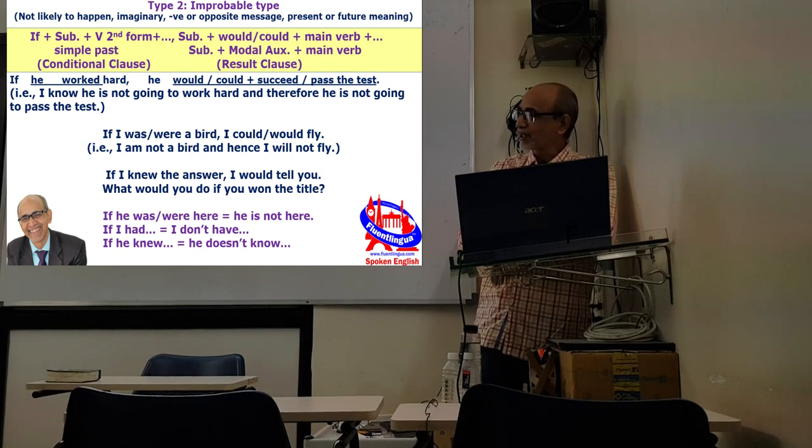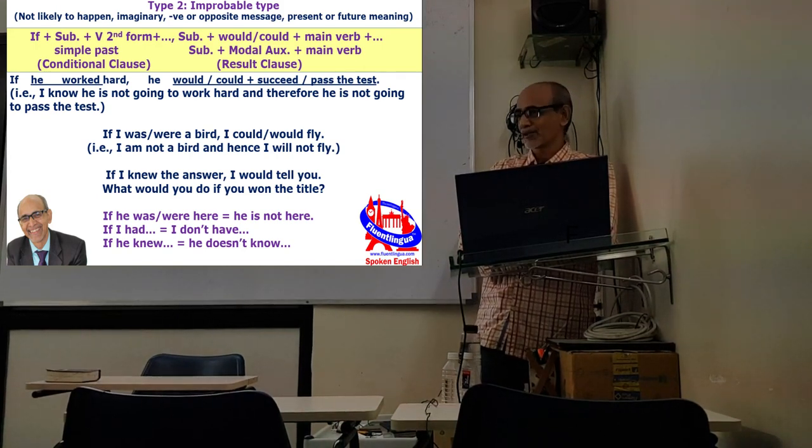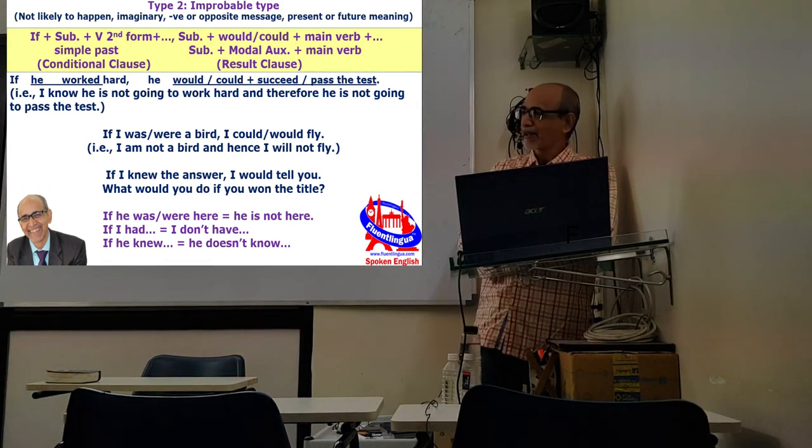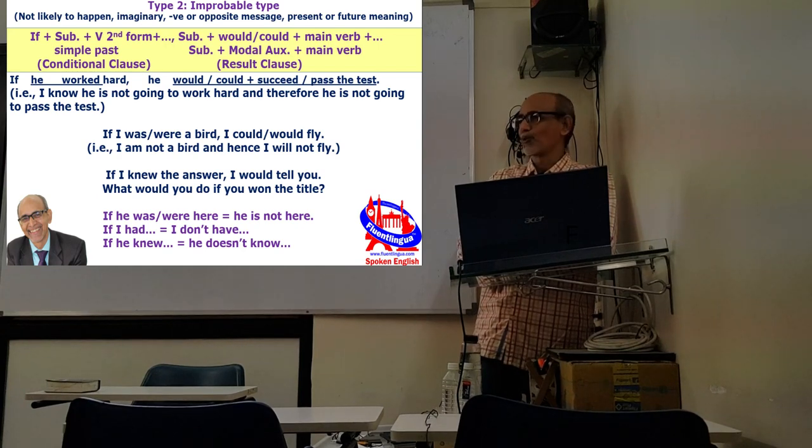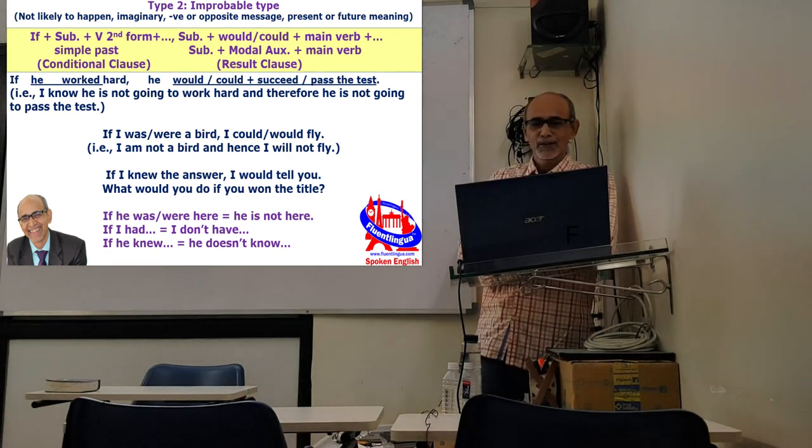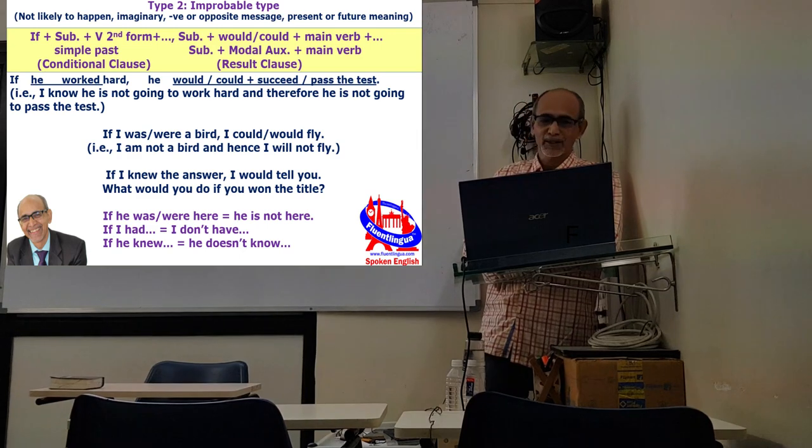When we say if he worked hard, he would pass the test, that means we know that he is not going to work hard. It conveys a negative message. If I had means I do not have. If I knew means I do not know. Past tense form but conveying the present meaning and negative meaning, opposite meaning. If he worked hard, he would pass the test, that means we know he is not going to work hard, so there is no question of passing the test.